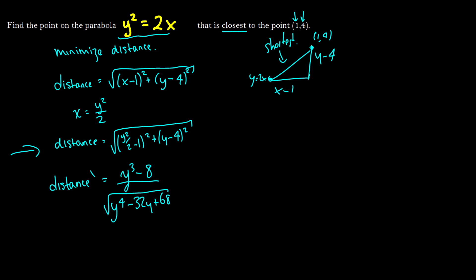So of course, we want to find where this distance prime is equal to zero. So we have y cubed minus 8 is equal to 0 when y cubed is equal to 8, which means that y is going to equal 2. Okay, and if y is equal to 2, then we have 4 is equal to 2 times x. So we have x is equal to 2. So we can claim that 2, 2 is going to be the closest point on the parabola to the point 1, 4.